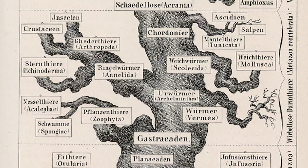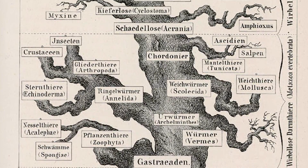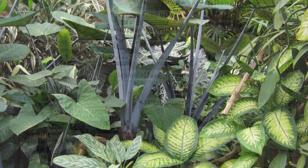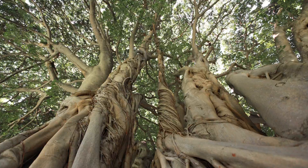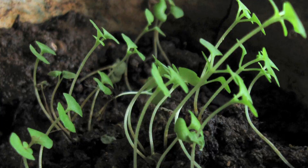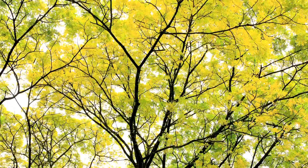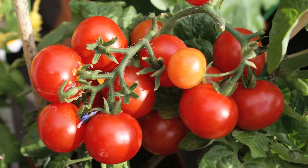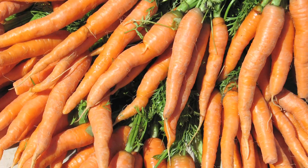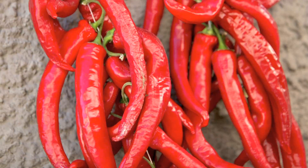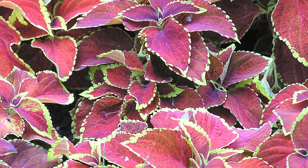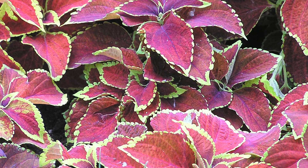For decades, biologists have used phylogenetic trees to understand relationships amongst hundreds of species. However, iPlant will assemble the computational resources to make a tree vast enough to incorporate all plants — perhaps more than 500,000 species.